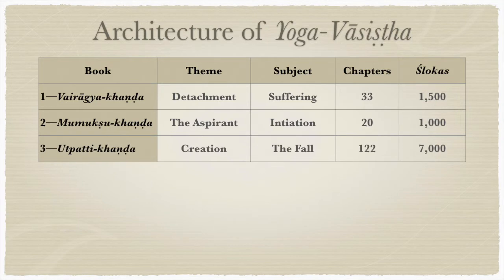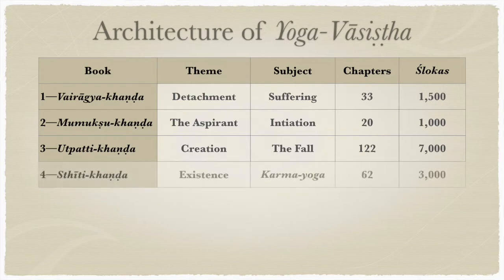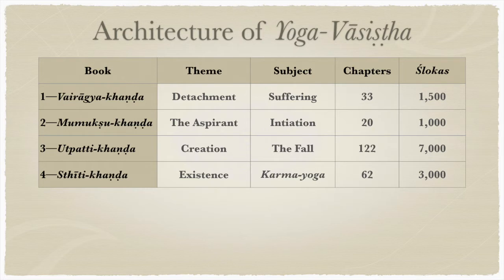The third book is called Utpatti Khandha, about creation. The subject is the fall into material existence. It has 122 chapters and 7,000 shlokas — quite extensive and a very detailed view. Book Four, Stheti Khandha, is about existence, with karma yoga as its subject. It has 62 chapters and 3,000 shlokas.